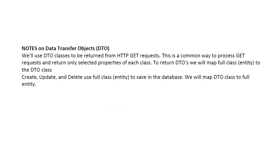Finally, we will be utilizing data transfer objects. Our GET requests will return DTO classes instead of the actual entities. This is a very common approach because it allows us to select only the properties from each class that we actually want to return. To keep track of the mapping between DTOs and our original entities, we will use AutoMapper. When we create, update, or delete an entity, we need the full entity saved in the database, so we will map the DTO class to the full entity. For GET requests, we map the full entity to the DTO class — so we will map these classes in both directions.